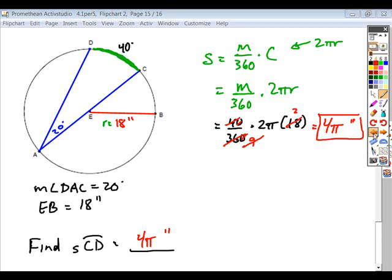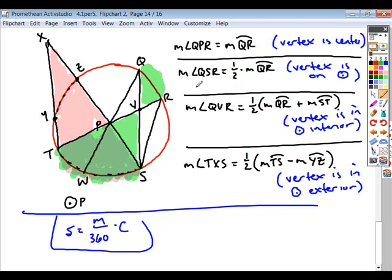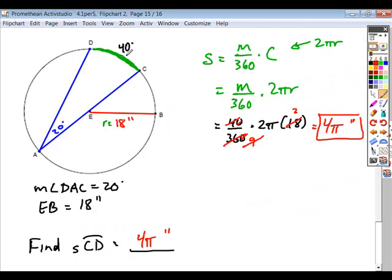One of the relationships for this was any time the vertex lies on the circle for an inscribed angle, it's going to be one half the intercepted arc. That means if we're looking to find the intercepted arc, we're going to go with the reverse process. If we know that this is half of the measure of CD, that means this would have to be 40.